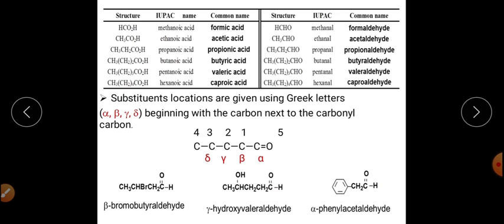Here is a list of examples: formic acid gives formaldehyde, acetic acid gives acetaldehyde, propionic acid gives propionaldehyde, butyric acid gives butyraldehyde, valeric acid gives valeraldehyde, and caproic acid gives caproaldehyde. This is the common system of nomenclature for aldehydes.